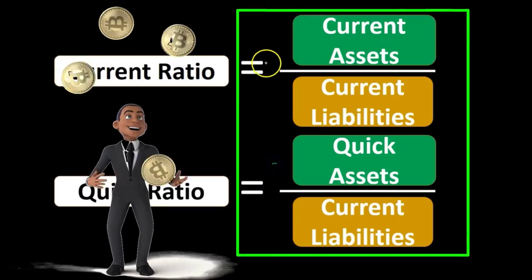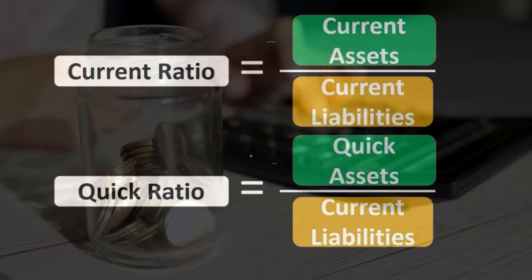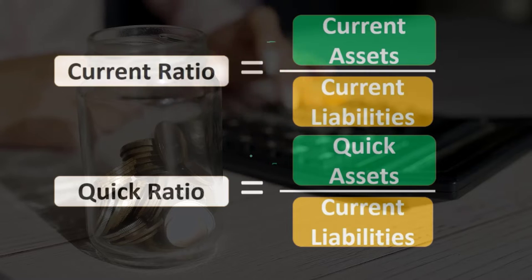So the question here, of course, is what's the difference between quick assets and current assets? Current assets are usually going to be listed right on the balance sheet. You'll see them. There's the current assets as opposed to the property, plants, and equipment, the more long-term assets.